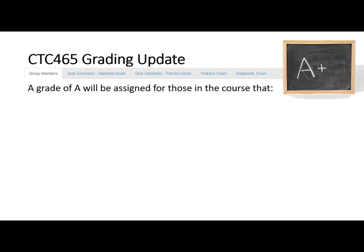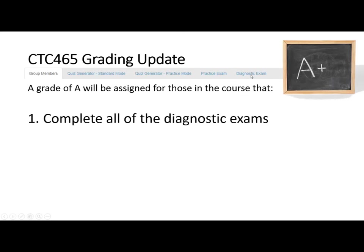I wanted to give a grading update. The grading is going to change just a little bit from what's on the syllabus. What I can see on my screen is who the group is, what quizzes you've done in standard mode, what quizzes you've done in practice mode, practice exams, and diagnostic exams. Basically, getting an A in the course will be based on the work you do. First, if you complete all the diagnostic exams I'll be able to see that — I'm not really worried about what your scores are; some will be 2 out of 10, some 8 out of 10.